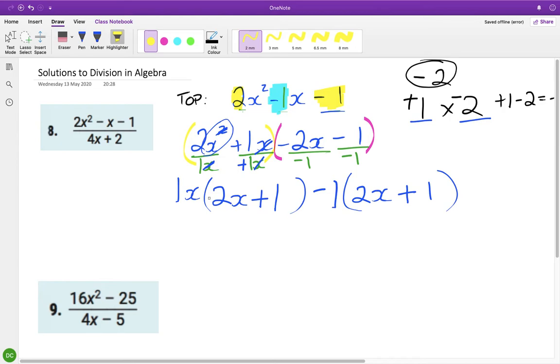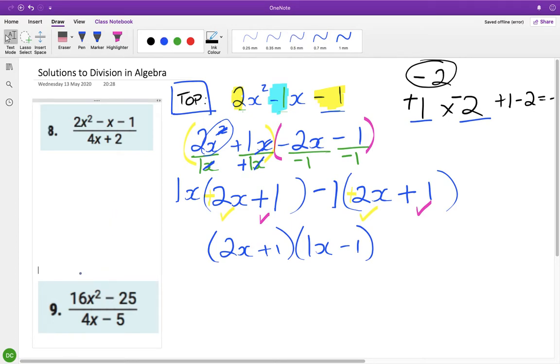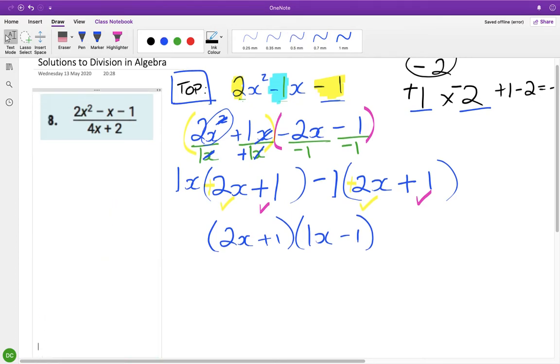Check that they match. So here I have a plus 2x, and here I have a plus 2x. And here I have a plus 1, and here I have a plus 1. So I write down my matching brackets, and I write down my common factors in a bracket. So that is my top line complete. I'm just going to move this down a little bit further.